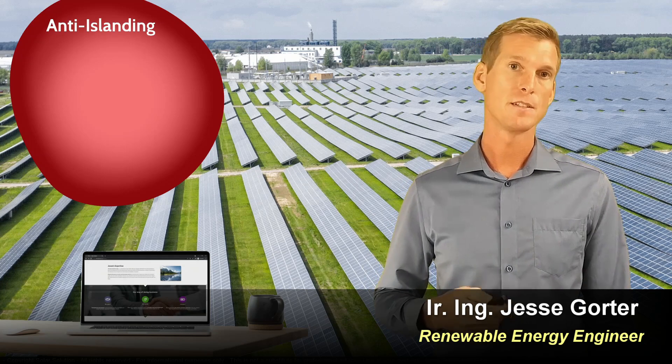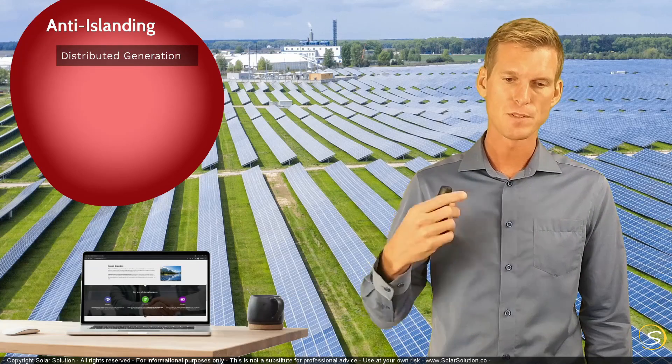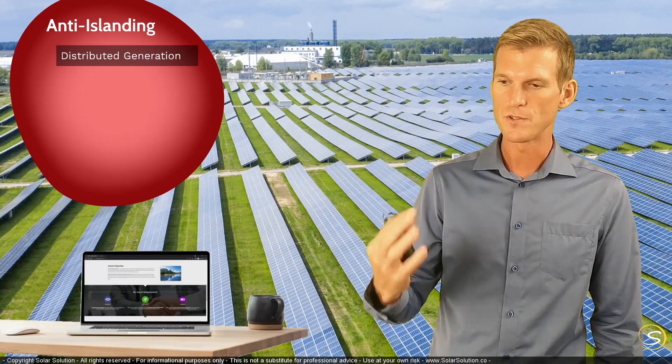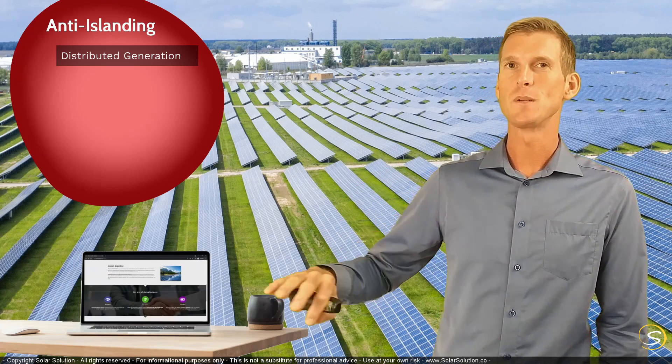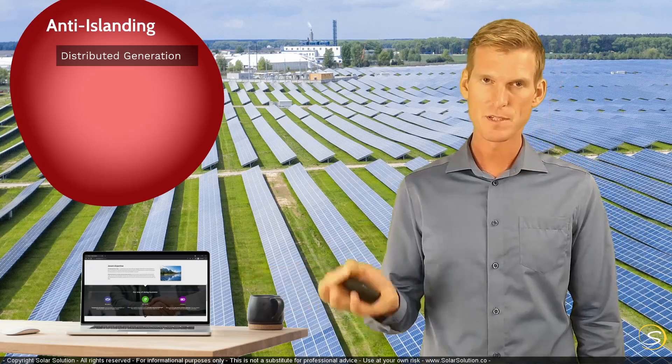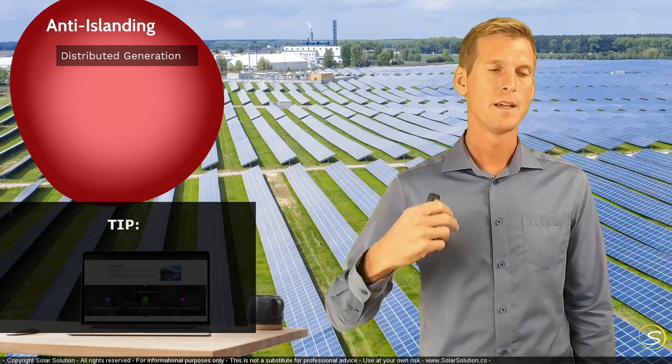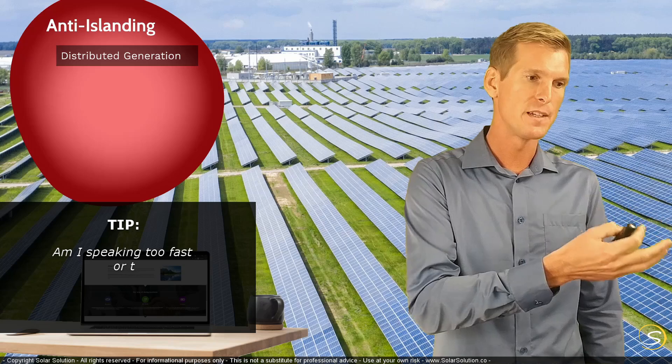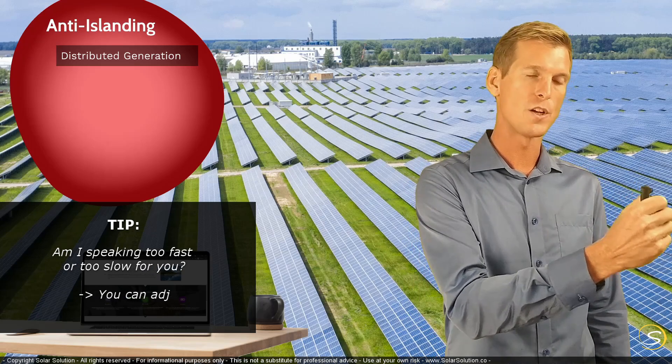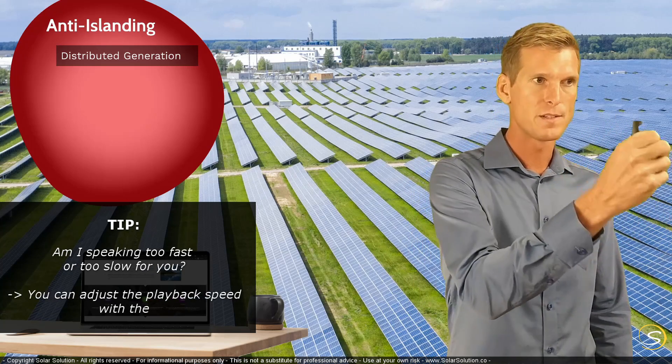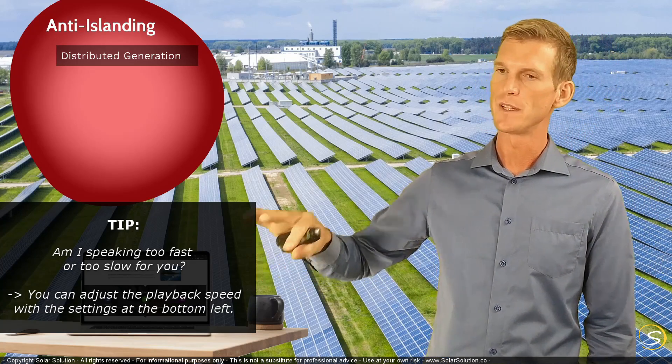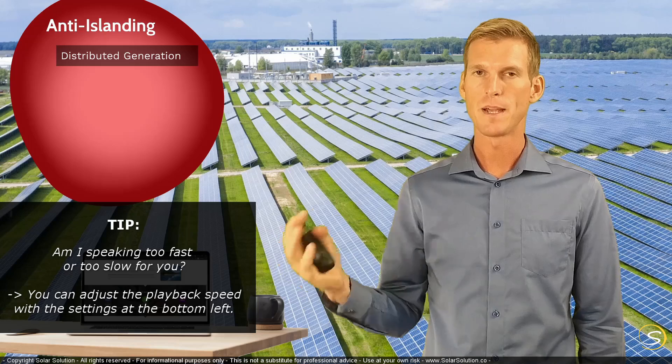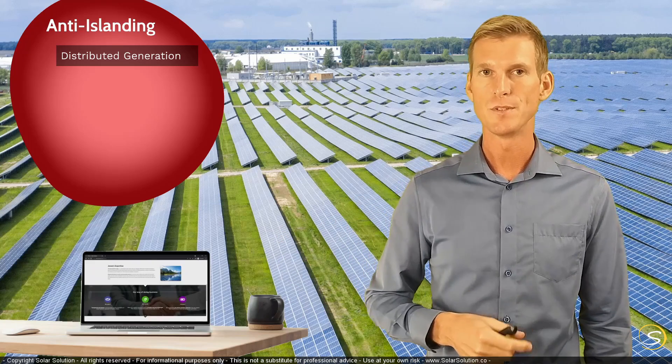So the first one is distributed generation. This refers to that people like yourself would produce power somewhere downstream in the electricity grid. The opposite of distributed generation would be a central generation in a power plant whereby there's one large producer and from that central point everything flows down through the grid towards you. So if you are producing at your residence power and feeding it back into the grid, that means distributed generation.